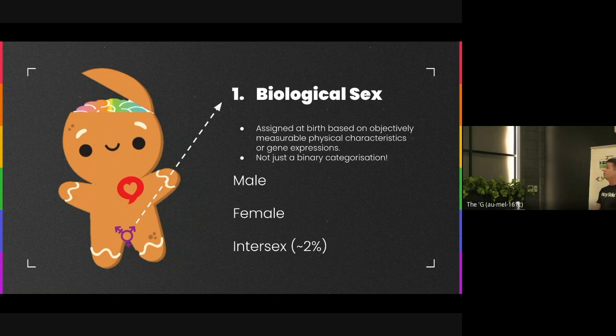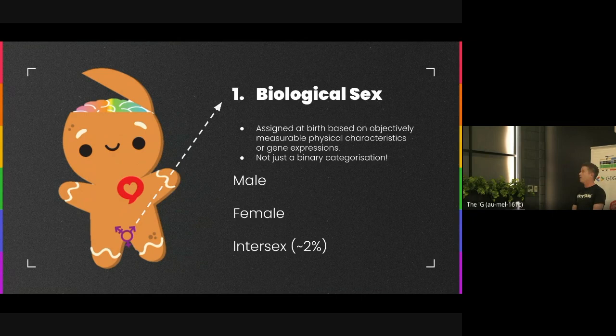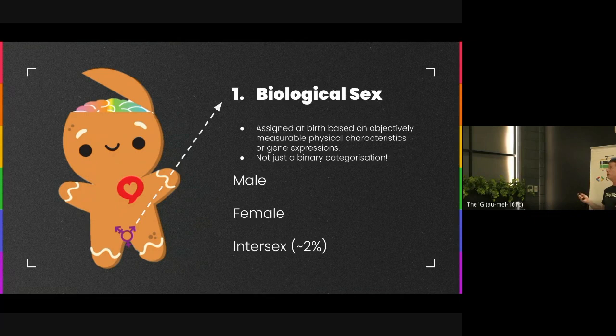Biological sex is probably one of the more easy-to-describe aspects of diversity under the LGBTIAQ+ banner. Generally speaking, it can be split out into male, female, and also intersex — which, although not hugely common at about 2% of the population, is roughly the same as the amount of people with green eyes, surprisingly enough. People who are intersex are actually born with sexual characteristics of both male and female, and for them it can be a difficult time trying to understand their gender identity as their physiological expression combines two of the more traditional gender roles.